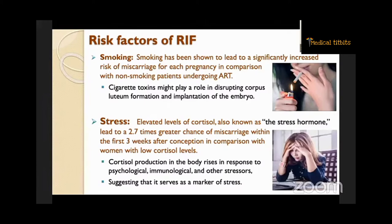Next is stress. Elevated levels of cortisol, also known as the stress hormone, lead to a 2.7 times greater chance of miscarriage between the first three weeks after conception in comparison with women with low cortisol levels. Cortisol production in the body rises in response to psychological, immunological, and other stressors, suggesting that it serves as a marker of stress.